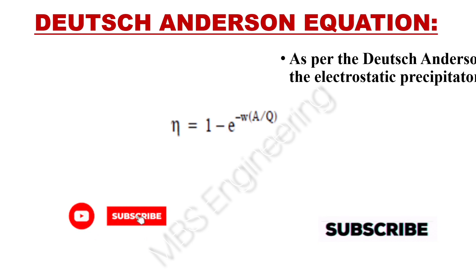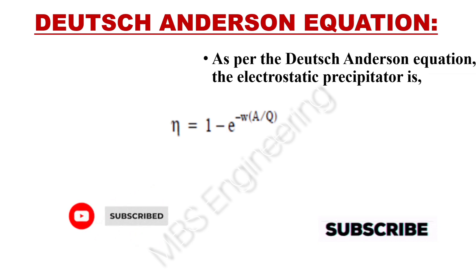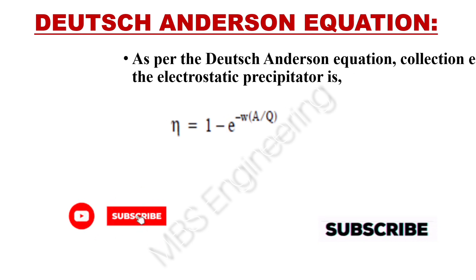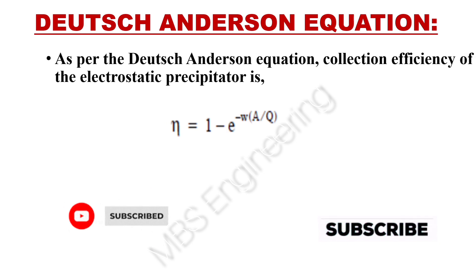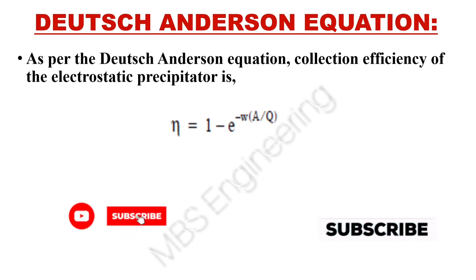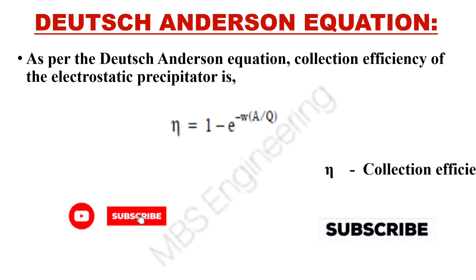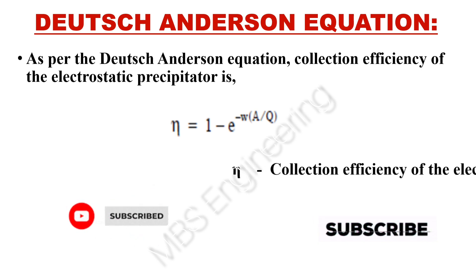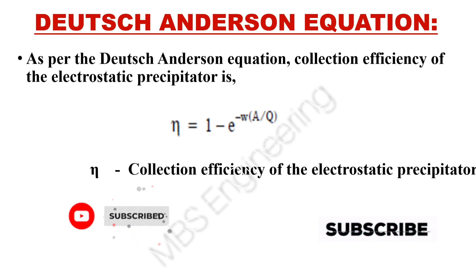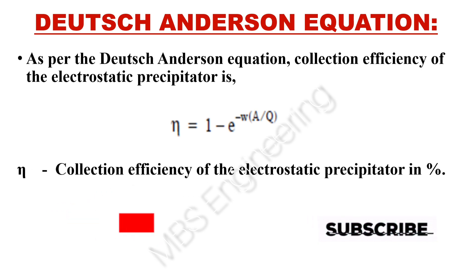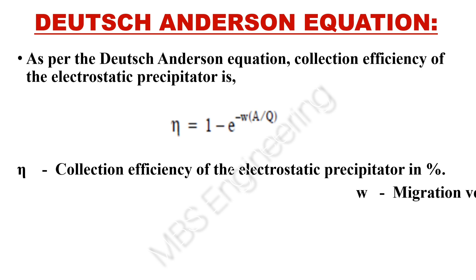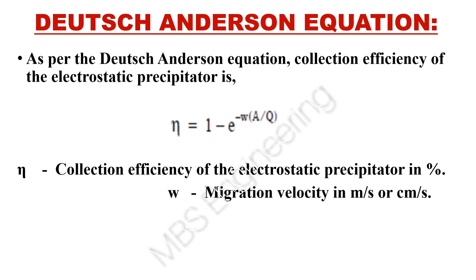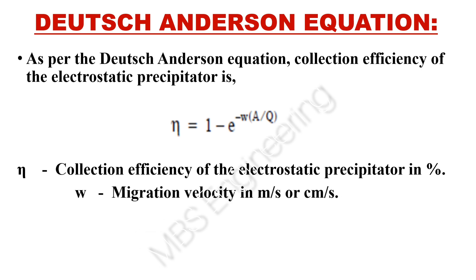We are going to understand the Deutsch-Andersen equation and how it is helpful to calculate the collection efficiency as well as migration velocity of the electrostatic precipitator. As per the Deutsch-Andersen equation, the collection efficiency eta of the electrostatic precipitator is equal to 1 minus e to the power of: migration velocity multiplied by the effective collecting plate area divided by gas flow through the electrostatic precipitator.